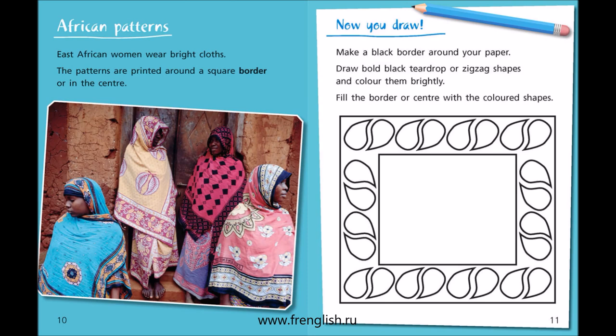African Patterns. East African women wear bright cloths. The patterns are printed around a square border or in the centre. Now you draw: make a black border around your paper. Draw bold black teardrop or zigzag shapes and colour them brightly. Fill the border or centre with the coloured shapes.